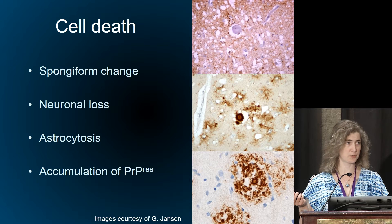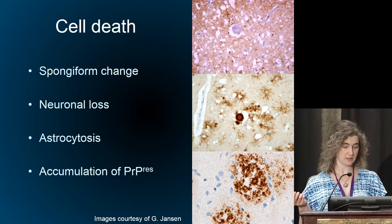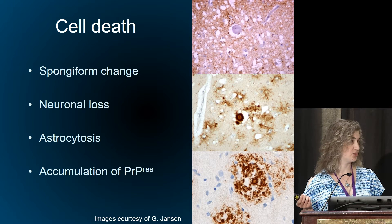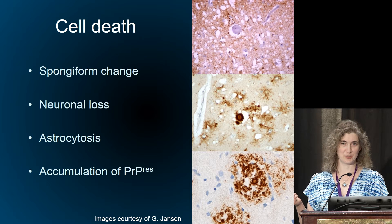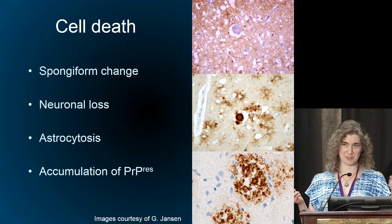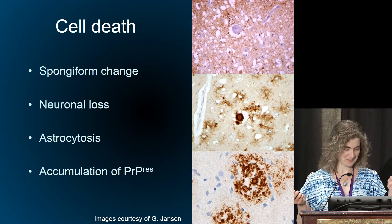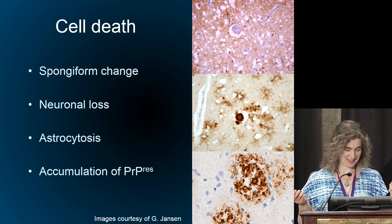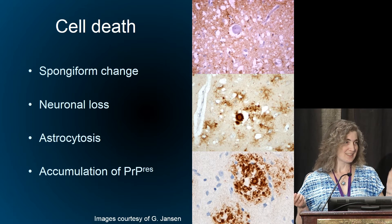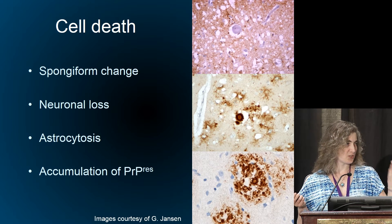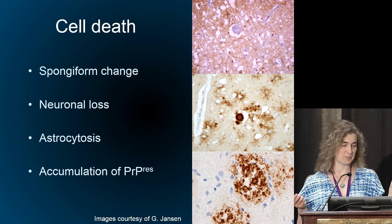The top one is sporadic CJD, the next one is variant, and the last one is GSS. The key here is there are strains — there's a strain dependency.